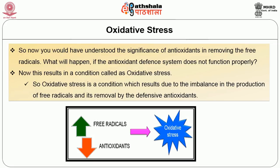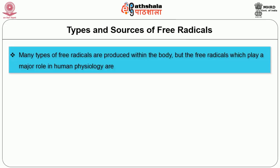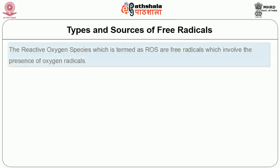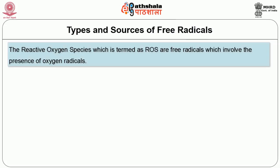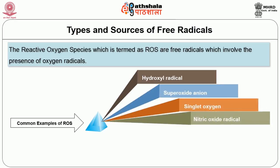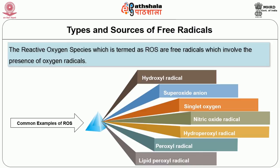Till now, we discussed in short about free radicals, the antioxidant system, and oxidative stress. Now let us discuss in detail about the different types and sources of free radicals. Many types of free radicals are produced within the body, but the free radicals which play a major role in human physiology are reactive oxygen species and reactive nitrogen species. The common examples of reactive oxygen species categorized as radicals include hydroxyl radicals, superoxide anion, singlet oxygen, nitric oxide radicals, hydroperoxyl radicals, peroxyl radicals, and lipid peroxyl radicals.